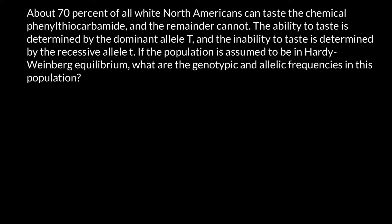In order to solve this problem, we need to use the Hardy-Weinberg formula, where frequency of all three genotypes that can be made by two alleles, dominant T and recessive t, would equal p squared plus 2pq plus q squared. This equals 1.